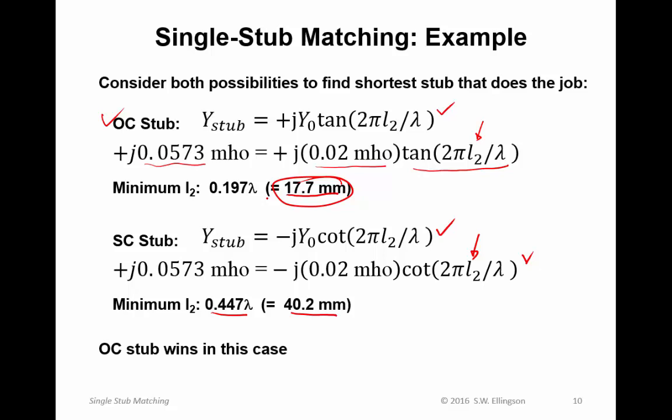One side note here. Every once in a while, somebody will work a problem like this and offer a value of L2, which is negative. That's obviously not physically possible. You can find solutions to these equations for L2 being negative, but they don't physically mean anything because the line length can't be negative. You simply need to increase L2 until you get to the first positive value that solves the equation.